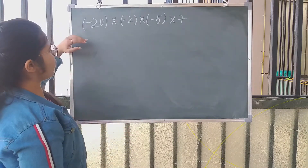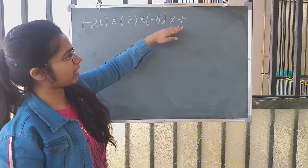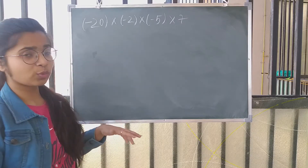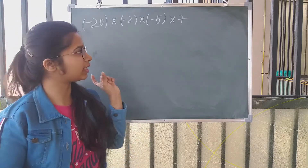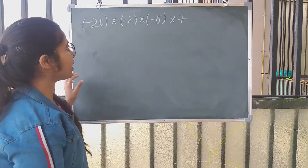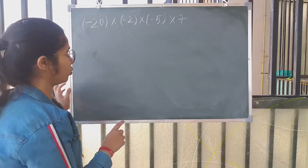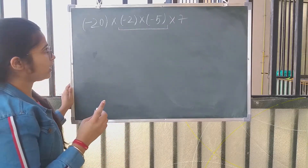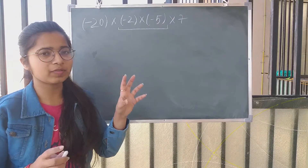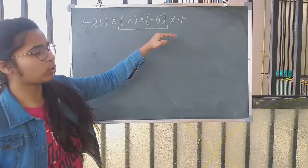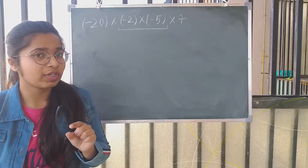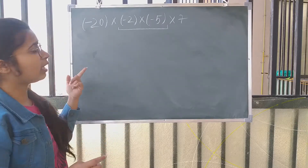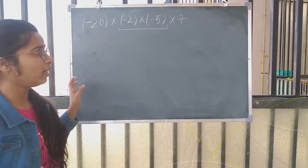Suppose you have a question where you have to multiply minus 20, minus 2, minus 5, and 7. There are so many numbers to multiply. What we do is group the numbers, because multiplication of integers is associative. We can group them and then multiply. Also, a useful point: when multiplying negative numbers, if there are an odd number of negative numbers in a product, the final answer will be negative.